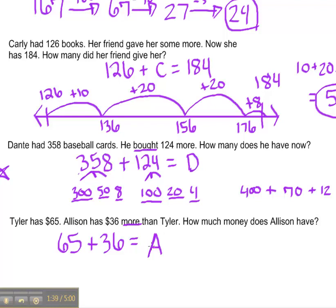and then to find what the total of Allison is. So it's a little bit of a different problem because Allison's information is based off of Tyler's with the clue of more, 36 dollars more.